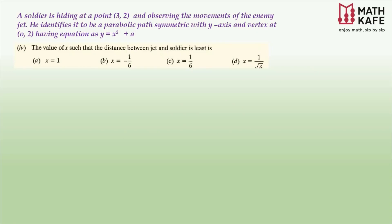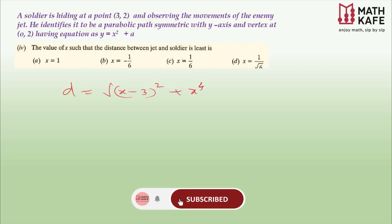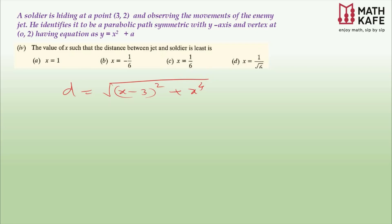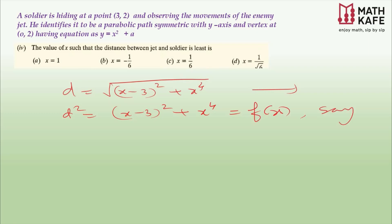The fourth question asks for the value of x that minimizes the distance. We have d = √[(x − 3)² + x⁴]. To avoid complex radical differentiation, we minimize d² instead, since if the distance is minimum, its square is also minimum. Let f(x) = (x − 3)² + x⁴. Then f′(x) = 2(x − 3) + 4x³ = 4x³ + 2x − 6 = 2(2x³ + x − 3).